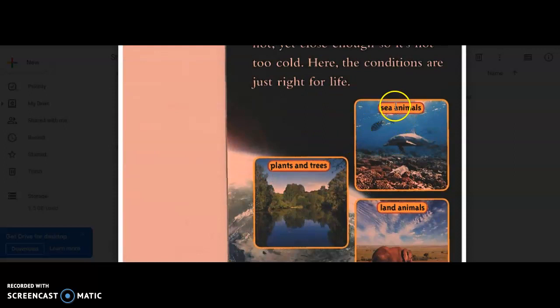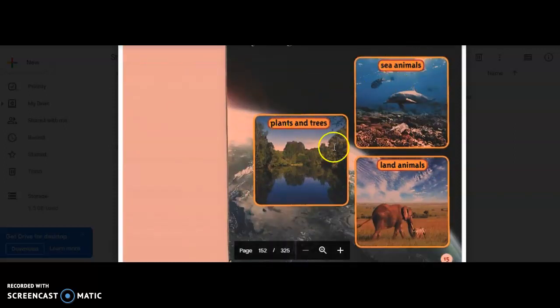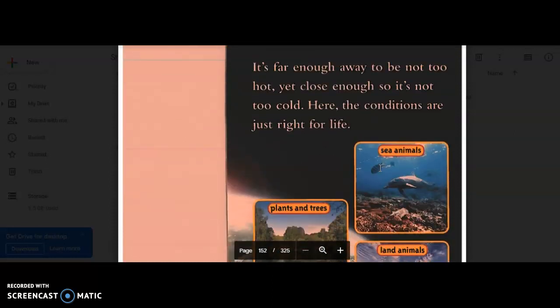Here the conditions are just right for life. That's why we are able to have sea animals, plants, and trees, and land animals on Earth because the conditions can support animals, the conditions can support trees, and all the other living things in our ecosystem.